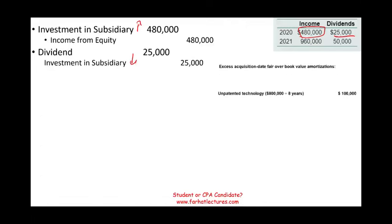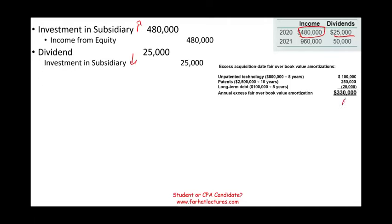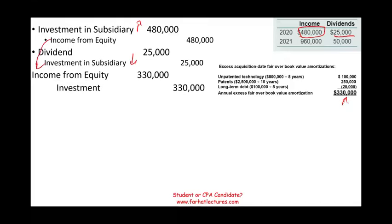As a result, we have net additional expenses of $330,000. We're going to debit Income from Equity and credit Investment by $330,000. Why? Because we added those assets, which increased our expenses — the net is $330,000. We're going to do the same thing for year two. In 2021, income of $960,000 increases our investment, we record Income from Equity. Then dividends of $50,000 reduce our investment. Then the $330,000 entry again — because those assets still have amortization years remaining (8, 5, and 10 years), by year two we still have them all being amortized.